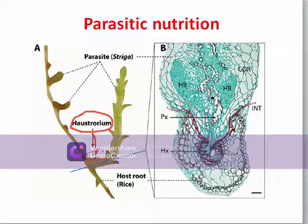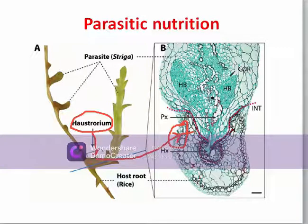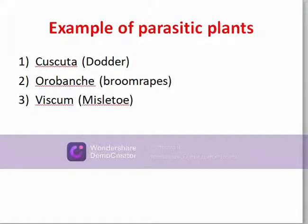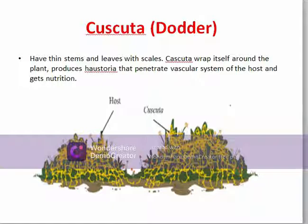The haustoria penetrate into the host tissue and get nutrition from the host cell — this is the parasitic mode of nutrition. Examples of parasitic plants include Cuscuta (dodder), Orobanche (broom rape), and Viscum (mistletoe). Cuscuta has thin stems and leaves with scales; it wraps itself around the plant and produces haustoria that penetrate the vascular system of the host to get nutrition.